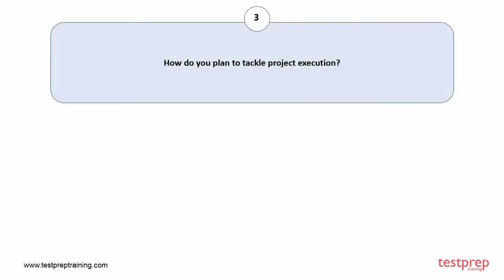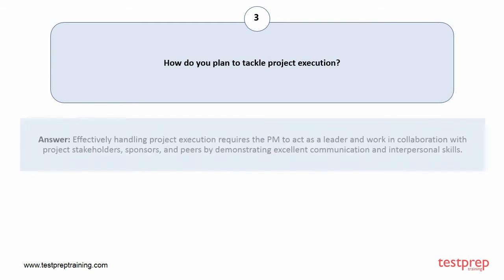Question number 3: How do you plan to tackle project execution? Your answer is: Effectively handling project execution requires the PM to act as a leader and work in collaboration with project stakeholders, sponsors, and peers by demonstrating excellent communication and interpersonal skills.